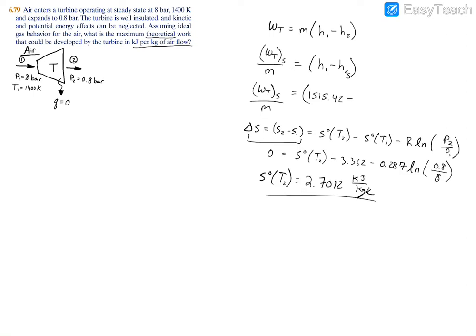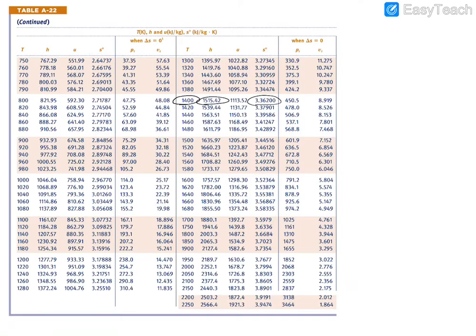Now we're going to use this to - we can actually use it to get our temperature, our exit temperature, if we're interested in that. But in this case we don't really need that, we can just go straight into the enthalpy. So we use 2.7012 and we see that it's somewhere between these two numbers here, very close to the 810.99 number, but we're going to see where it is. And it's going to be - the exit enthalpy is going to be somewhere between those two numbers.